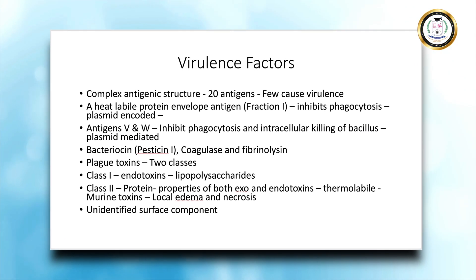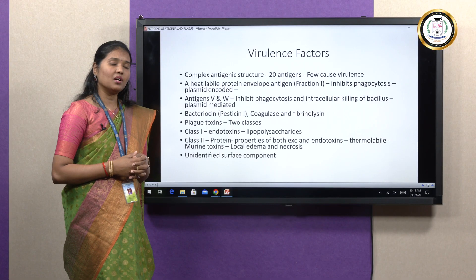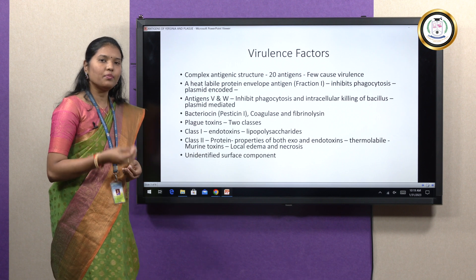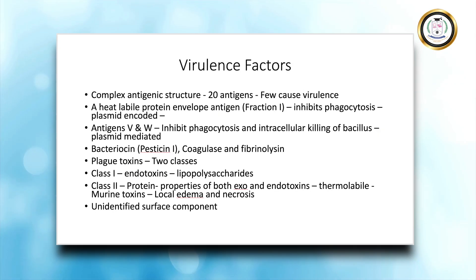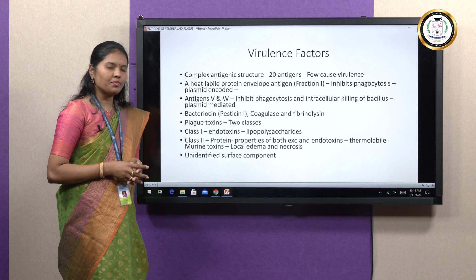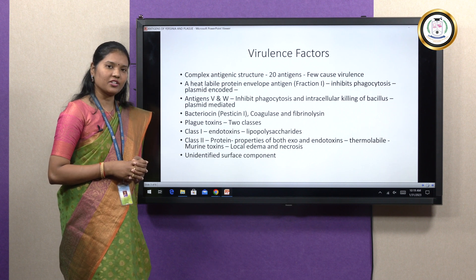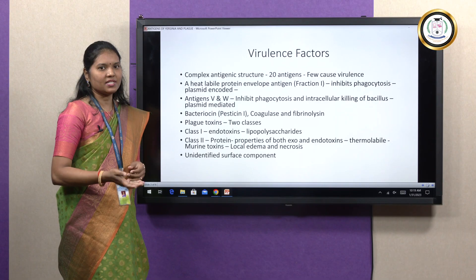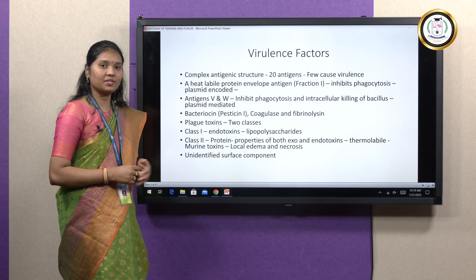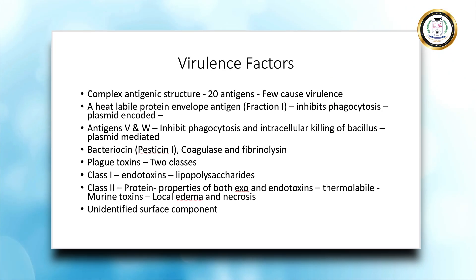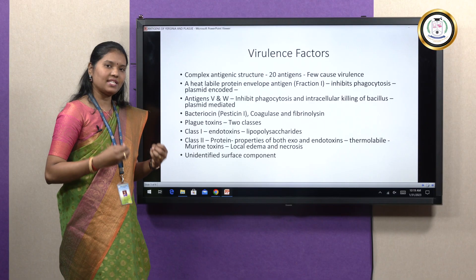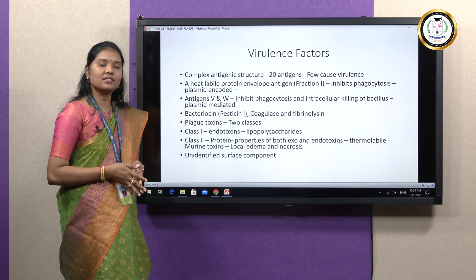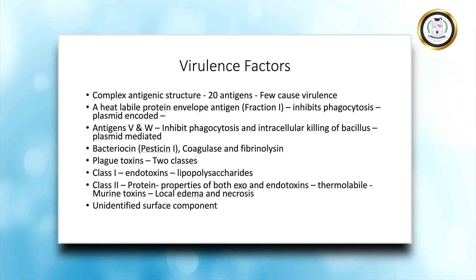Talking about its virulence factors, Yersinia has a complex antigenic structure composed of at least 20 different antigens responsible for its virulence. The first important one is a heat-labile protein envelope antigen present in the capsule region, also called Fraction 1, which is able to inhibit phagocytosis and intracellular killing of the organism inside the host, and it is plasmid encoded. There are also two separate antigens called V and W, produced simultaneously but separately, which have the same function as Fraction 1 — inhibiting phagocytosis and intracellular killing — and are also plasmid encoded.